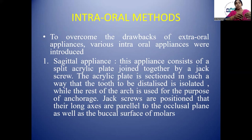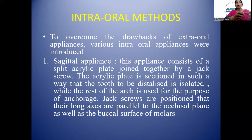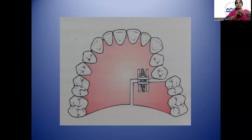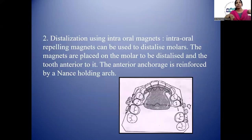To overcome the drawbacks of extra-oral appliances, various intraoral appliances were introduced. The sagittal appliance consists of a split acrylic plate joined by a jack screw. The acrylic plate is sectioned such that the tooth to be distalized is isolated while the rest of the arch provides anchorage. Jack screws are positioned with their long axis parallel to the occlusal plane and the buccal surface of the molars.